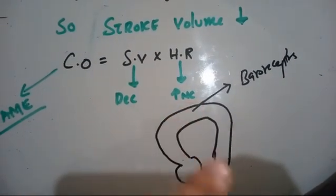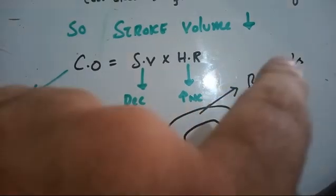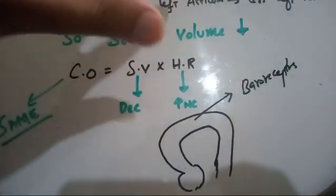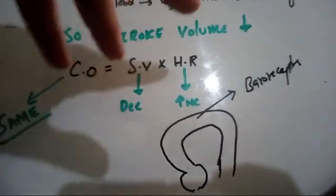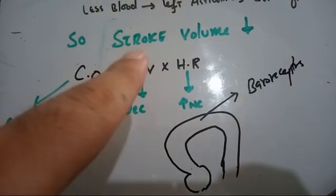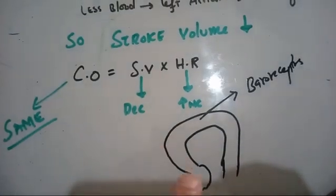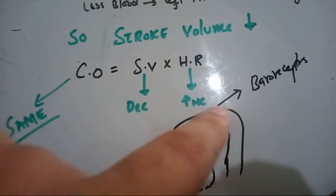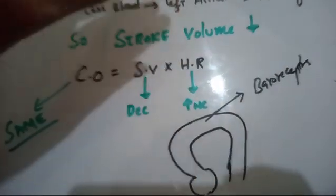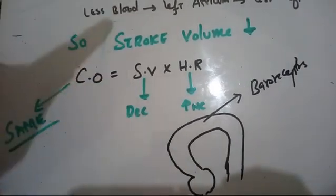When there is decreased stroke volume, there is less blood coming out of the left ventricle, so the baroreceptors and stretch receptors are less stimulated. If the stretch receptors are less stimulated, the body assumes that blood pressure is low. From the vasomotor center in the brain, there is sympathetic activation, which increases the heart rate. So during inspiration, decreased stroke volume leads to sympathetic activation and increased heart rate.